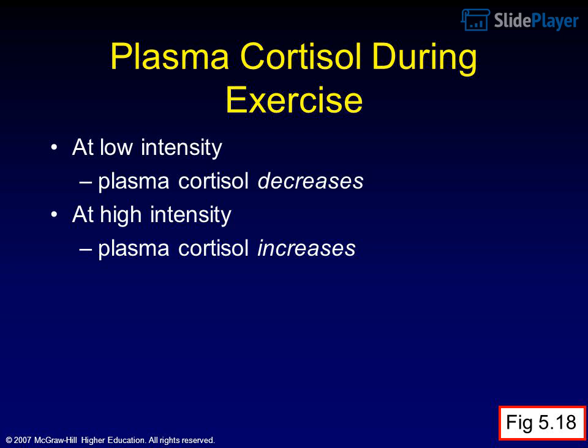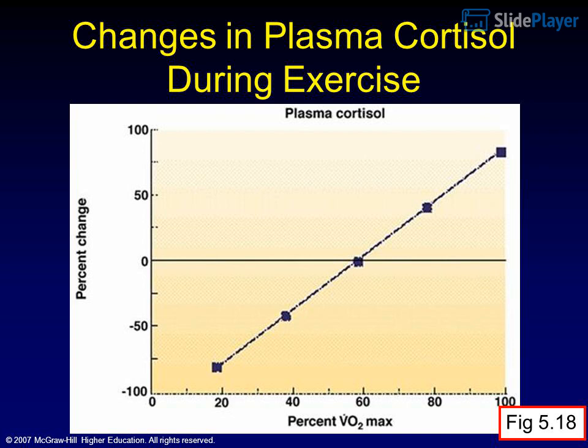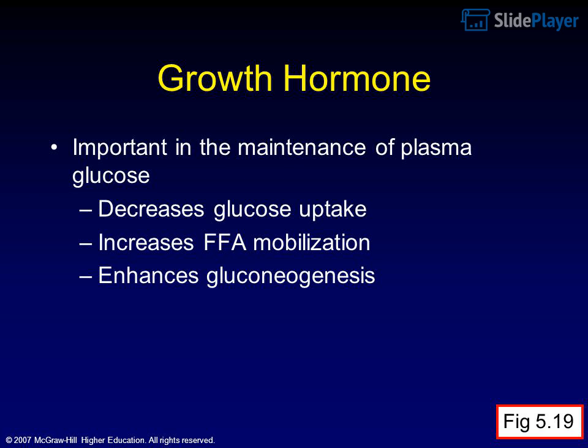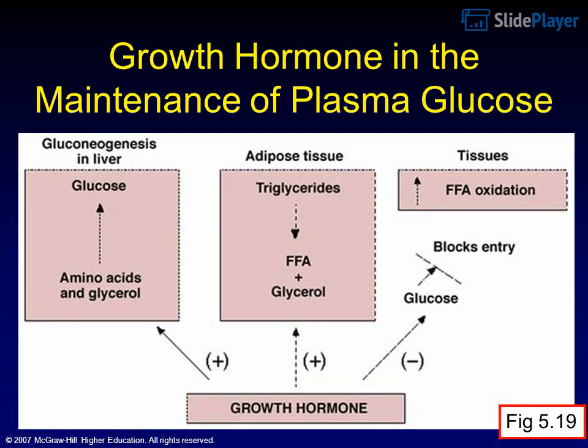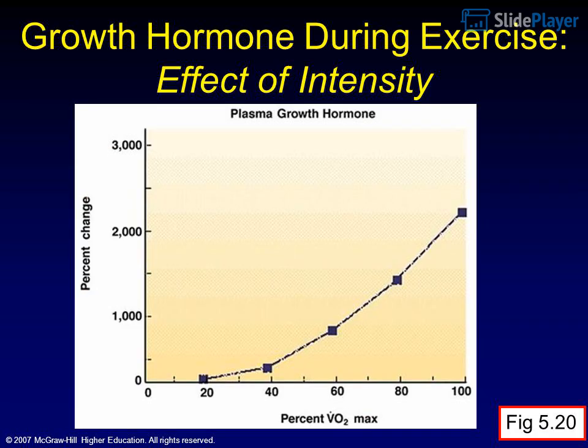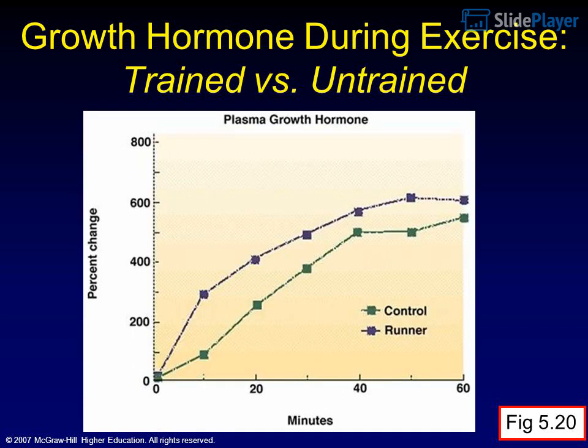Plasma cortisol decreases at low exercise intensity. Growth hormone is important in the maintenance of plasma glucose: it decreases glucose uptake, increases FFA mobilization, and enhances gluconeogenesis. Growth hormone response varies with exercise intensity and training status (trained vs. untrained).